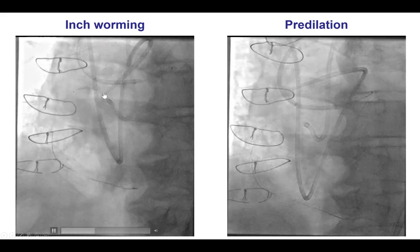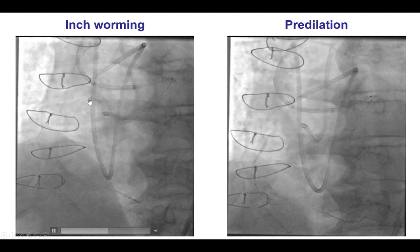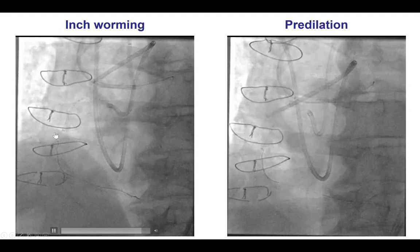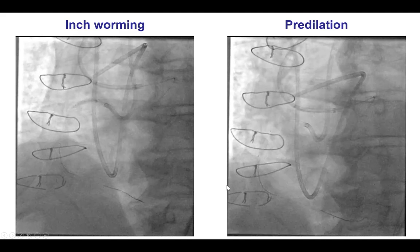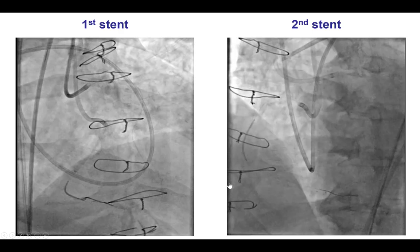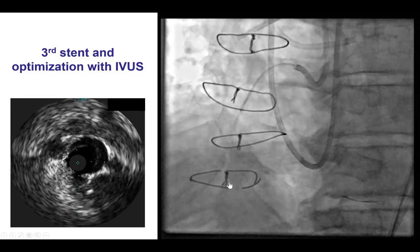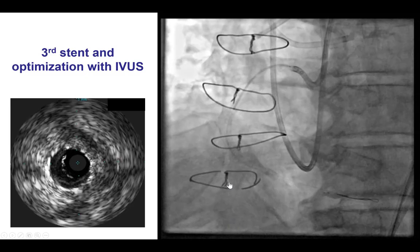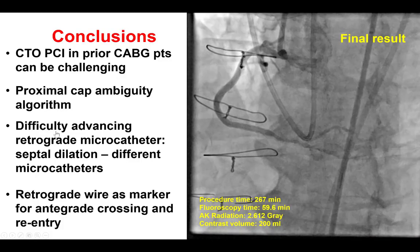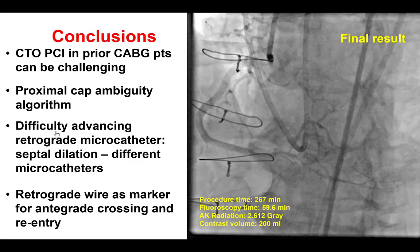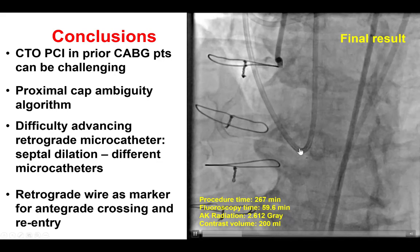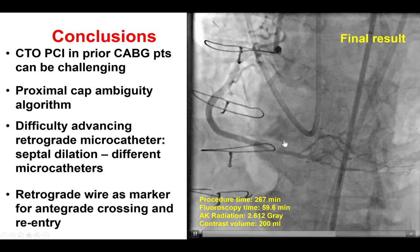We used the inch-worming technique to advance a guide catheter extension. The balloon was inflated and deflated, the guide extension advanced nicely all the way to the mid-right coronary artery. We pre-dilated the lesion, then placed stents from the distal to the proximal right coronary artery. Intravascular ultrasound was performed to ensure good stent expansion and stent strut apposition, providing a nice final angiographic result with TIMI flow into the distal vessel. The patient had resolution of his ventricular tachycardia.